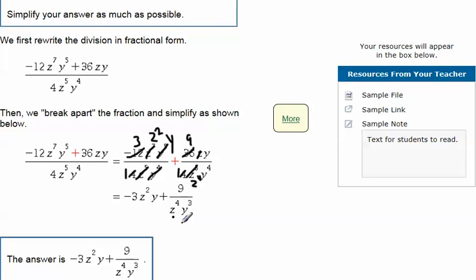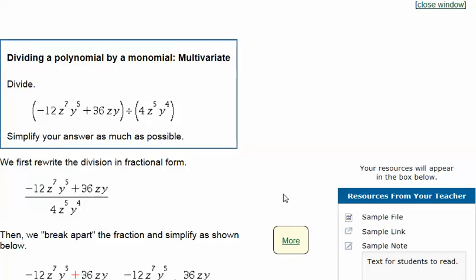There's nothing left we can do, so we are done. So the answer is negative 3z squared y plus 9 over z to the 4th y to the 3rd. And that is how you solve a polynomial divided by a monomial multivariate.